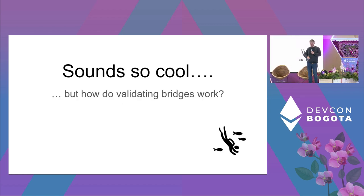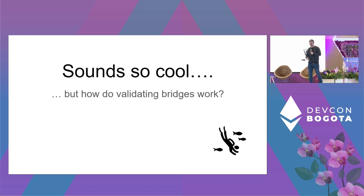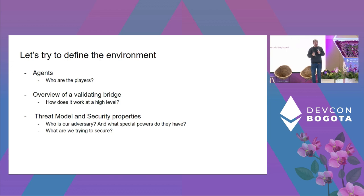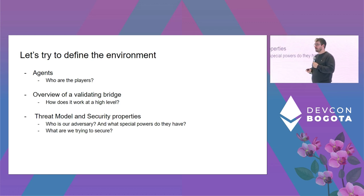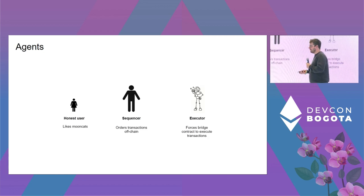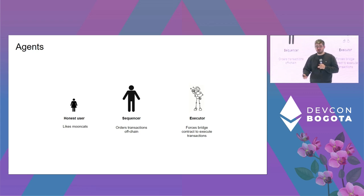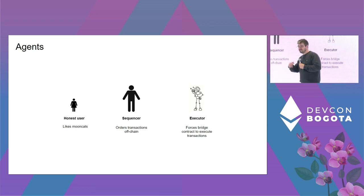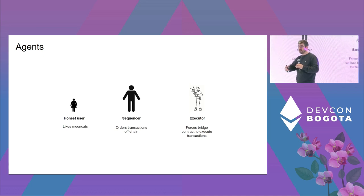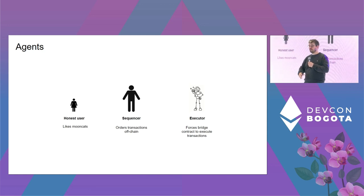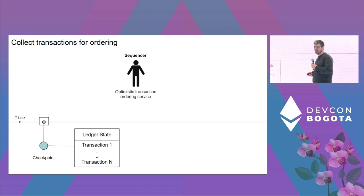Can rollups really deliver on this promise? Let's define the environment. Here are the agents involved: first, the honest user, who just wants to lock their Mooncat into the system, buy and sell it, and get it back out. Then the sequencer, who takes user transactions, orders them, and passes them on — a transaction ordering service. Finally, the executor, who takes the transactions, executes them, and proposes an update to the bridge.